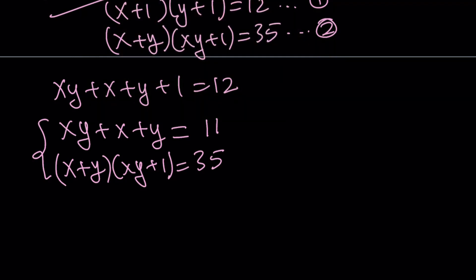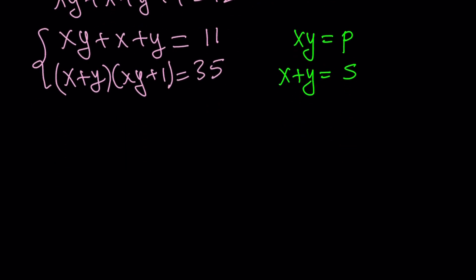So let's go ahead and do the following. I'm going to call xy p, which is product. And x+y, s for sum. And then my equation turns into the following. p + s = 11. And then s(p+1) = 35. So this is my new system now.